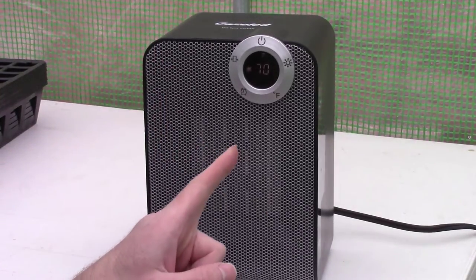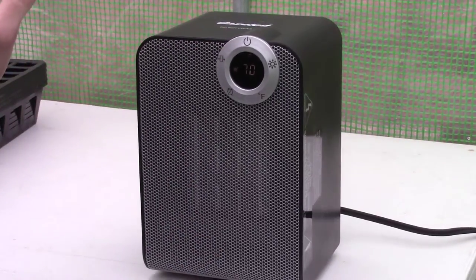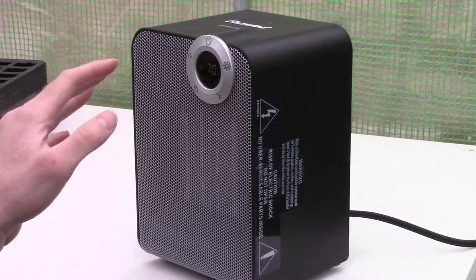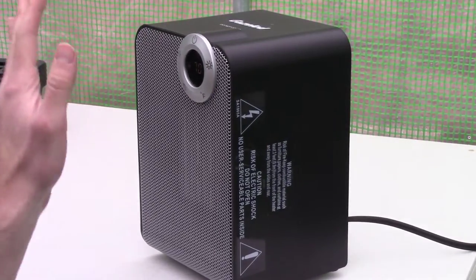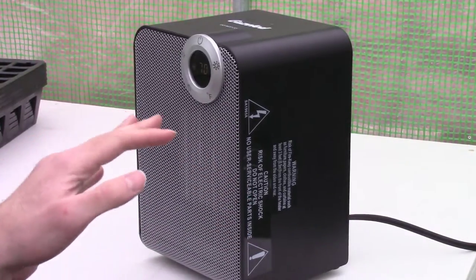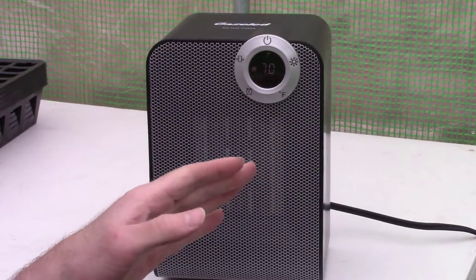And one thing I really like about this one, check this out. Oh yeah, that's what I'm talking about. It oscillates. So that way it's distributing the heat more evenly here in the greenhouse. So it has a 50 degree oscillation, I think. So it'll go back and forth about 50 degrees.